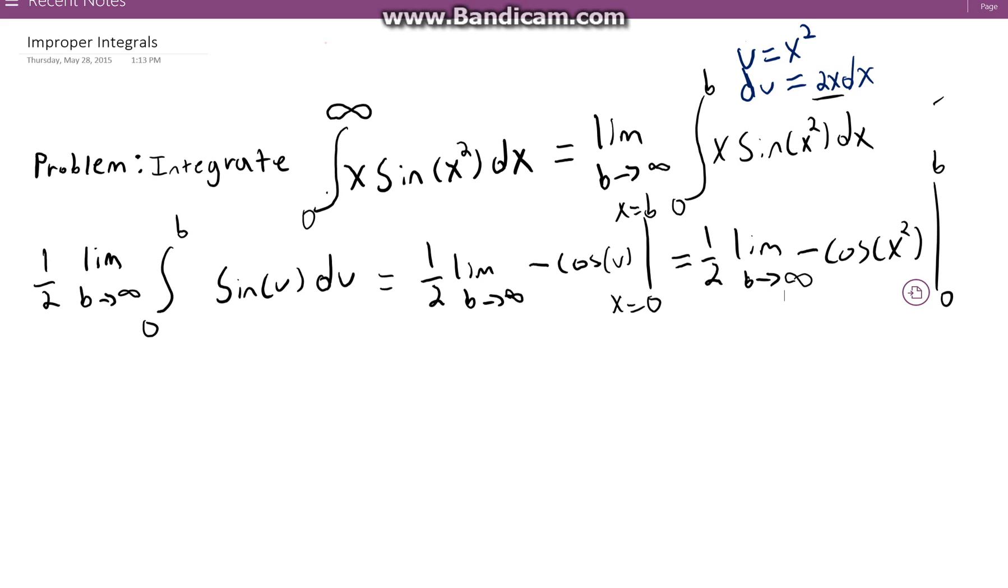Now at this point it should be pretty easy to tell that this will actually diverge. But let's continue on and put it into its final form. So one half times the limit as b approaches infinity is equal to negative cosine of b squared minus negative cosine of zero.